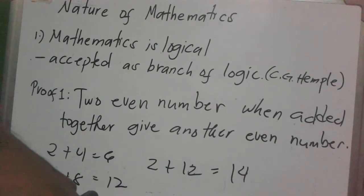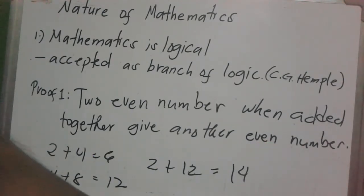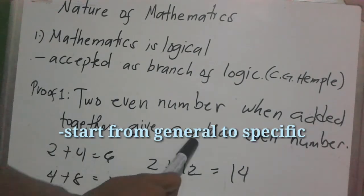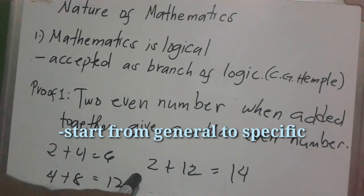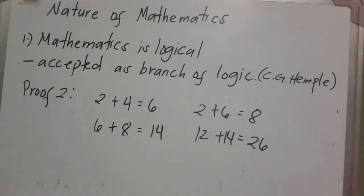So what method of logic is Proof 1? That's deductive. When we say deductive, it goes from general to specific — it starts with the general statement and then gives specific examples.